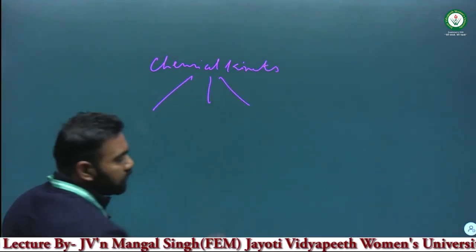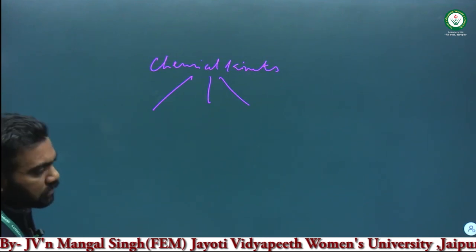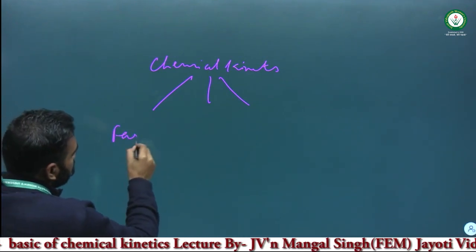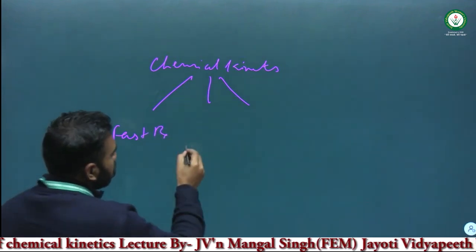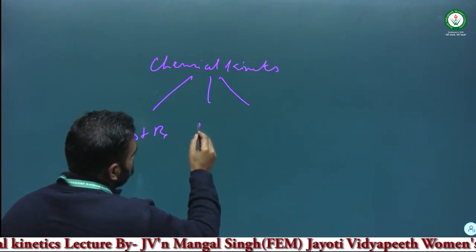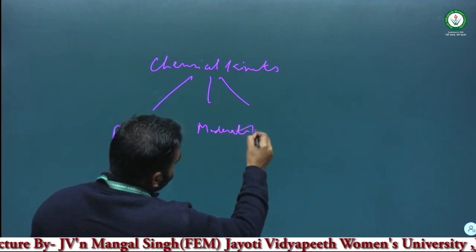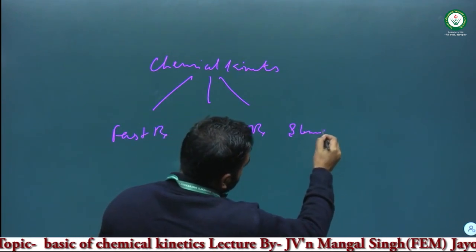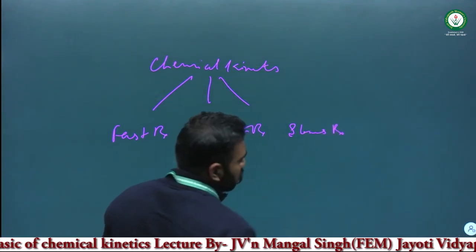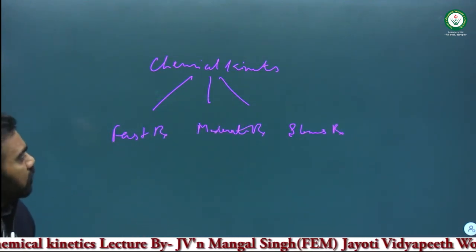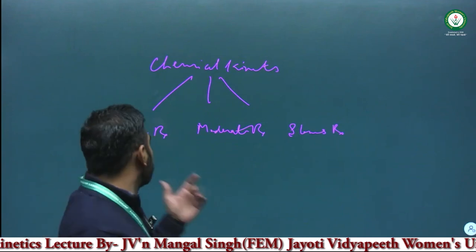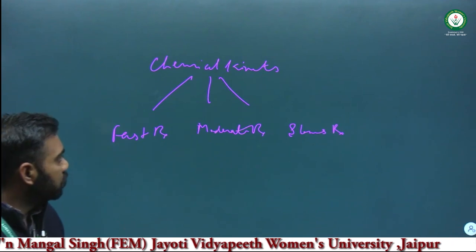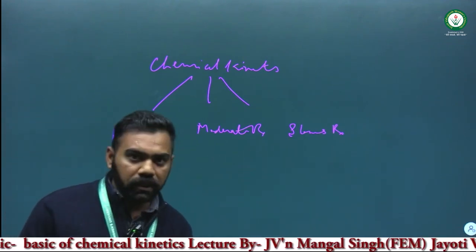In chemical kinetics, we generally study three types of reactions. First, reactions which are very fast — we define them as fast reactions. Second, we define moderate reactions. Third, we define slow reactions.